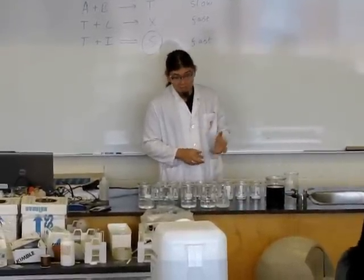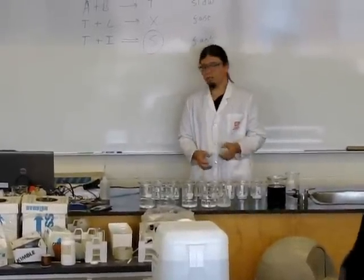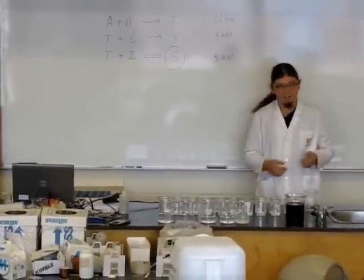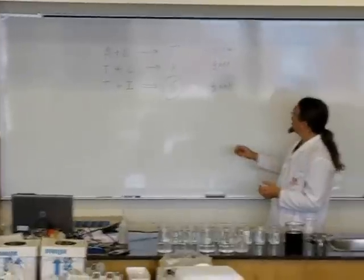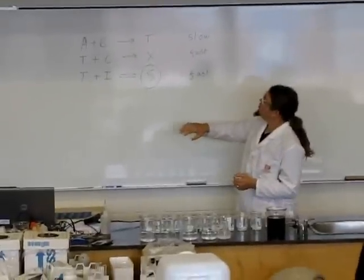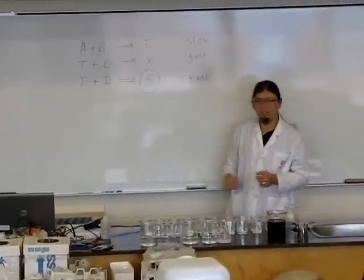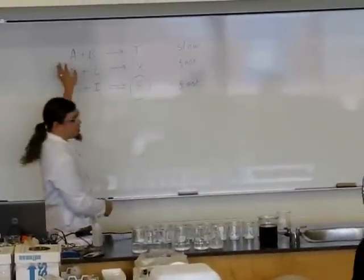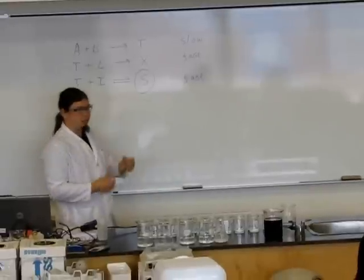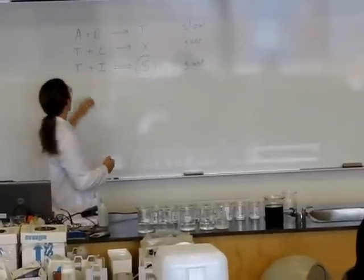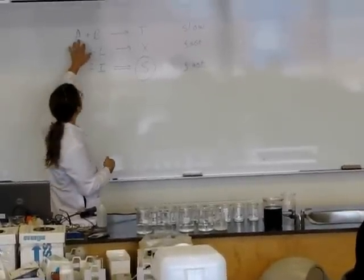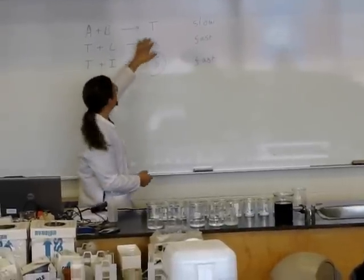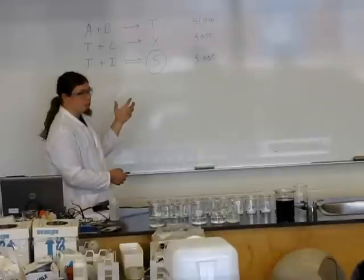I'd like to demonstrate, if I can, how this works with you guys as the demonstrating tool. So this is kind of a general outline — these aren't meant to be chemicals of any kind, they're not chemical symbols. Basically, two reactants react together in a very slow fashion to form this T substance.